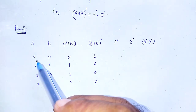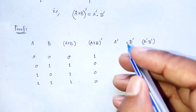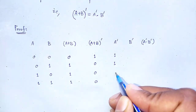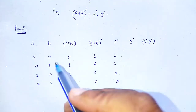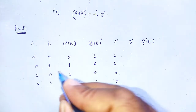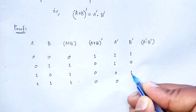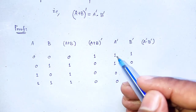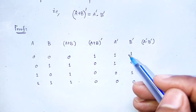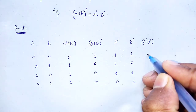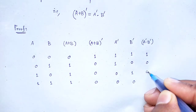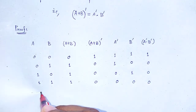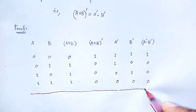Complement of A is just the opposite of A: 1, 1, 0, 0. Complement of B: 1, 0, 1, 0. For A' · B', when both A' and B' are 1 (i.e., when A=0, B=0) the output is 1; otherwise all cases give 0. So A' · B' = 1, 0, 0, 0.